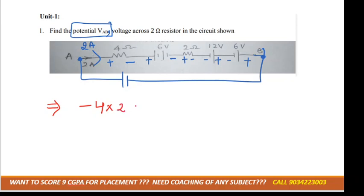much? 2. Then again, second sign, that is minus 6. Again, second sign, that is minus 2 into current, that is 2. Correct. Again, second sign, that is plus 12. Then again, second sign, that is plus 6. That is